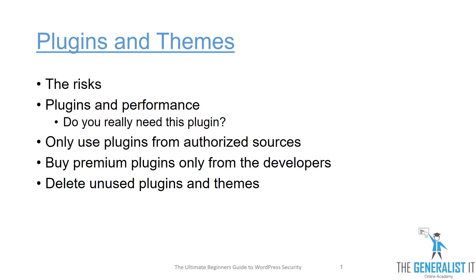If a website tells you that because prices are so low they cannot offer support, that should serve as a warning sign. Usually that means they do not own the plugin and therefore cannot offer support. It signals that the code is simply a clone of the original premium plugin. If you purchase the plugin via that source, it may include a fork — a malicious code — that can put your site at risk. So when you buy a premium plugin, always go to the source and buy from the original developer, not someone who pretends to be the original developer.